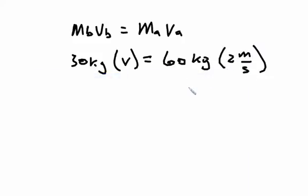We know that sixty kilograms times two meters per second equals 120 kilogram meters per second. On the other side, we have the mass of thirty kilograms times velocity.